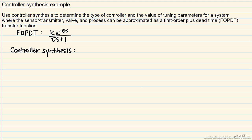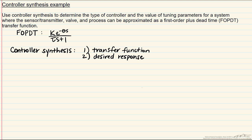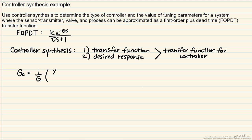The methodology of controller synthesis is that we pick two things. We pick a process transfer function — which also includes the valve and the sensor transmitter — and we pick a desired response. Generally our default desired response is 1/(τc·s+1). From those two values we can get the transfer function for a controller in the PID family, including the tuning parameters. The formula is: one over G, multiplied by (y/x) divided by (1 - y/x), where y/x is 1/(τc·s+1).